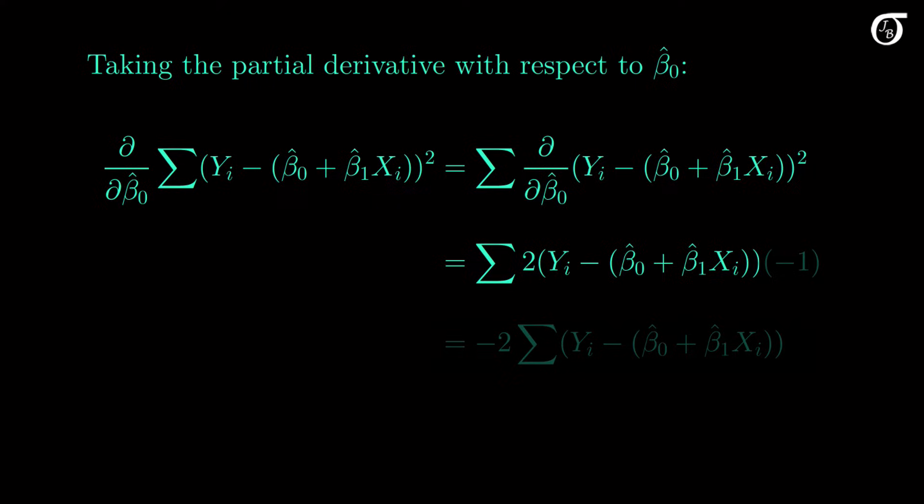We can't forget the chain rule. We now need to multiply by the derivative of what's inside the brackets. As it relates to the derivative, the y sub i and beta1 hat times x sub i terms do not involve beta0 hat, so those go to 0, and we're left with the derivative of minus beta0 hat, and that is simply minus 1. So we multiply by minus 1.